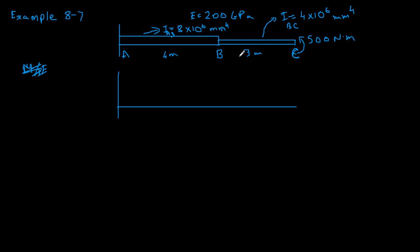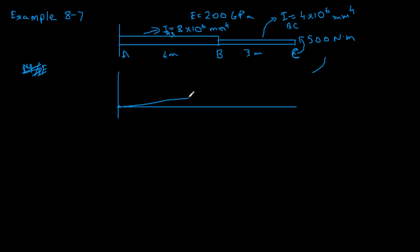Let's visualize how this structure would look if it was deformed. We have a 500 concentrated moment at the end and no other forces acting on the support, so this part just curves like that. Throughout the beam it's under compression at the top and tension at the bottom. Since compression is at the top, that means positive moment, so our moment should be positive.